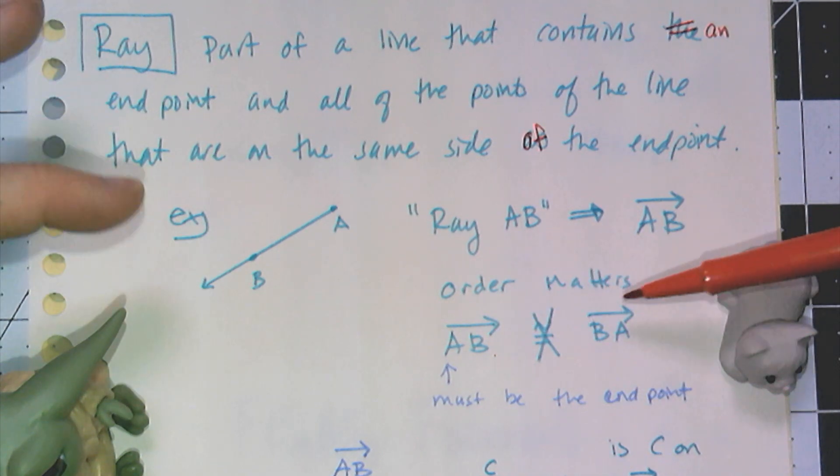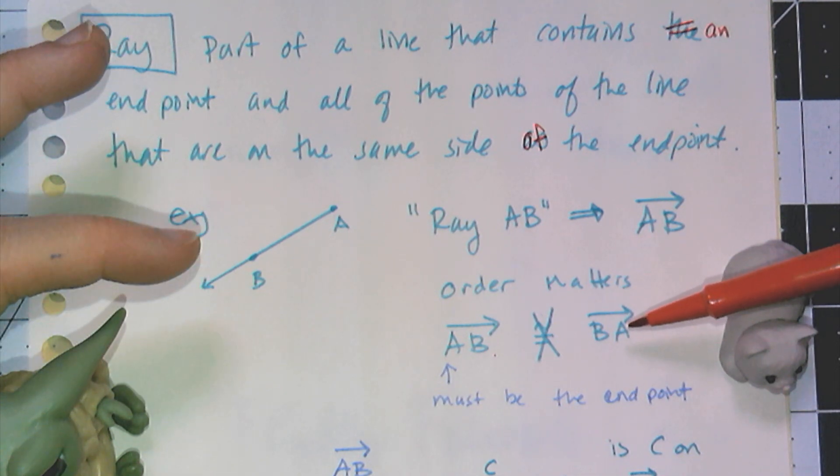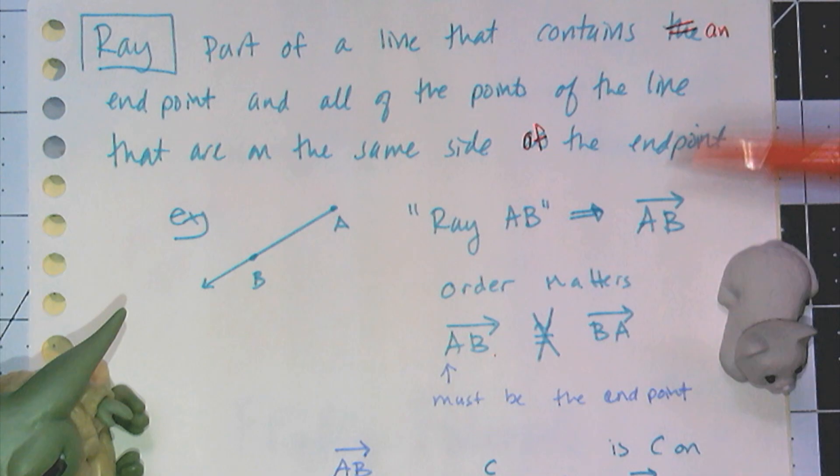Ray AB is not identical and not congruent to ray BA, because if I write it this way, I'm telling everybody that B is the endpoint and A indicates the direction. That is a key. The first letter in the definition of your ray has to be the endpoint.